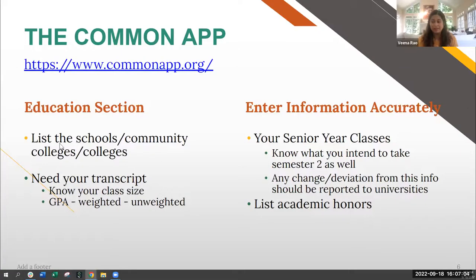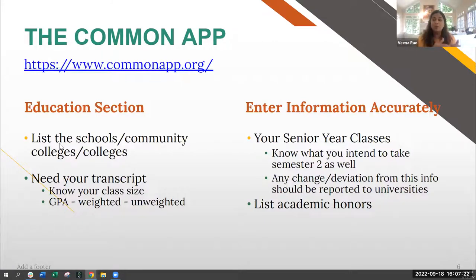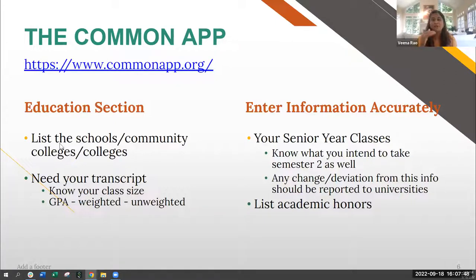One of the things you'll be asked to enter is the classes you're taking during your senior year. This means you need to know what you're taking now and for the second semester. Universities who review your application will want to know what you're taking and will look at the rigor of your curriculum. If there's any deviation from the course list you listed on your application after you've submitted it, it's important that you reach back out to the universities you've applied to, to let them know about changes to your course load — so they find out in advance rather than waiting for the post-graduation transcript. And definitely list all the academic honors you've received, because the application asks specifically if you've received any academic honors.